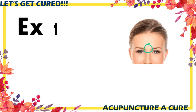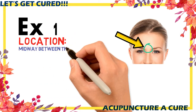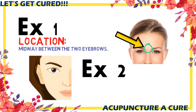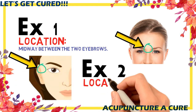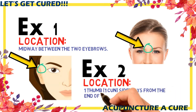EX1 Acupoint — Angle Point. This acupoint is located at the end of the eye, one thumb sideways from the outer corner of the eye.